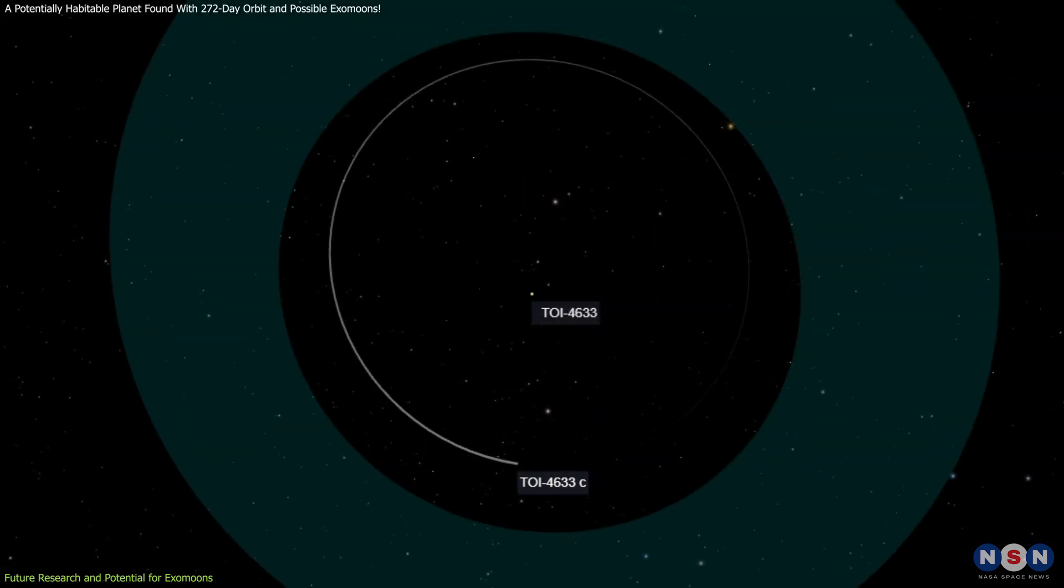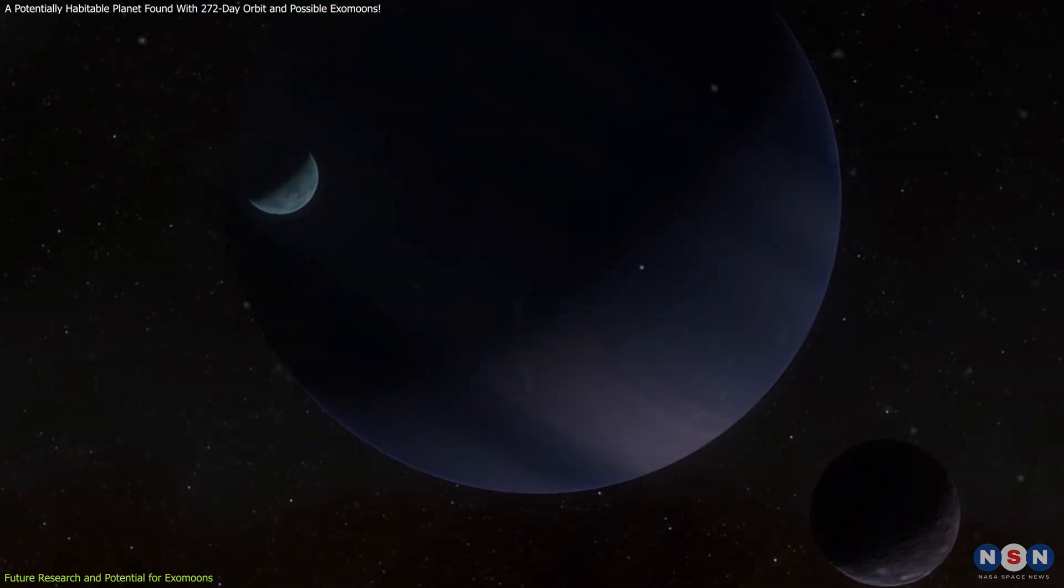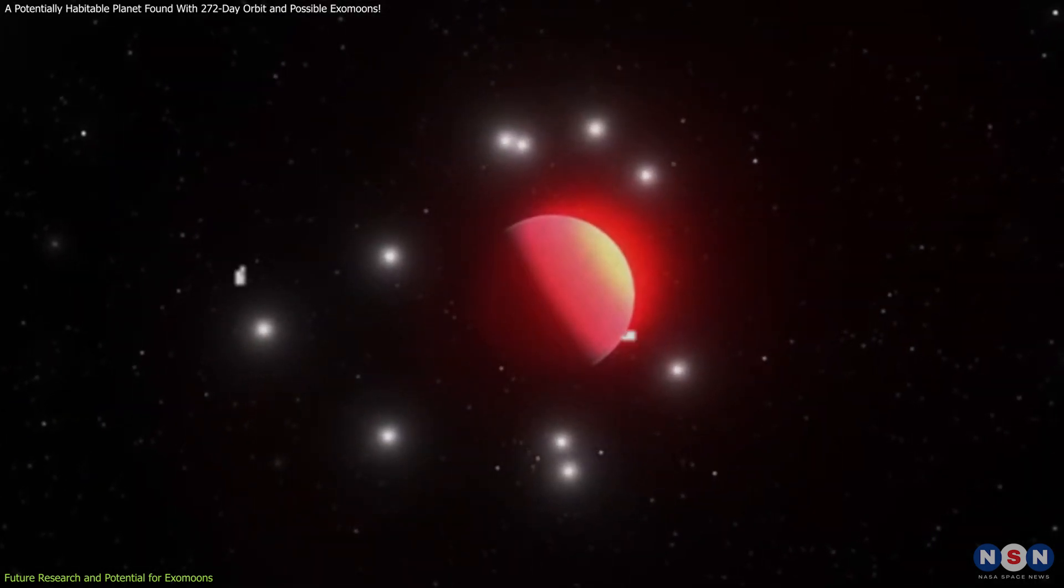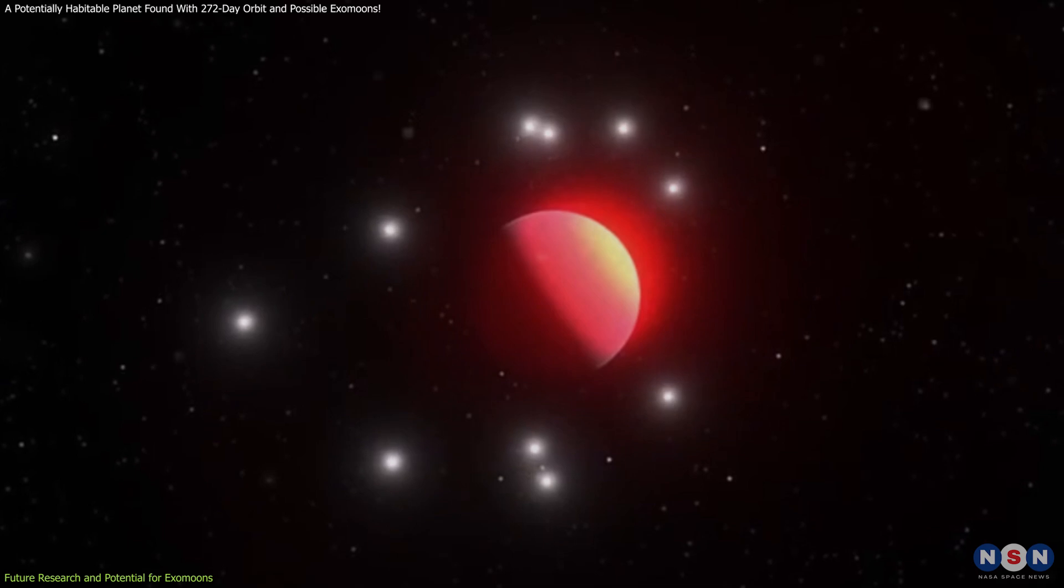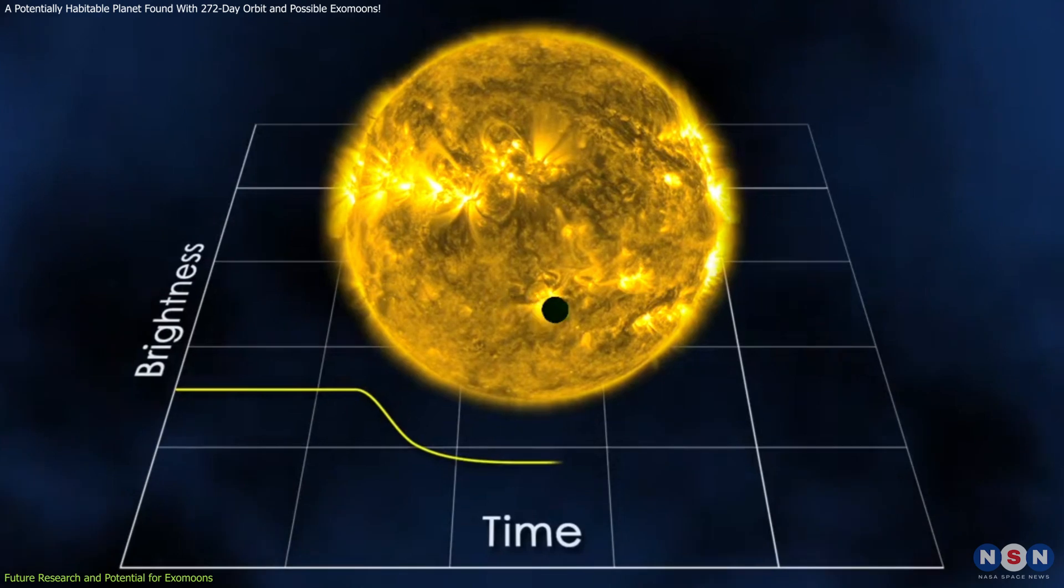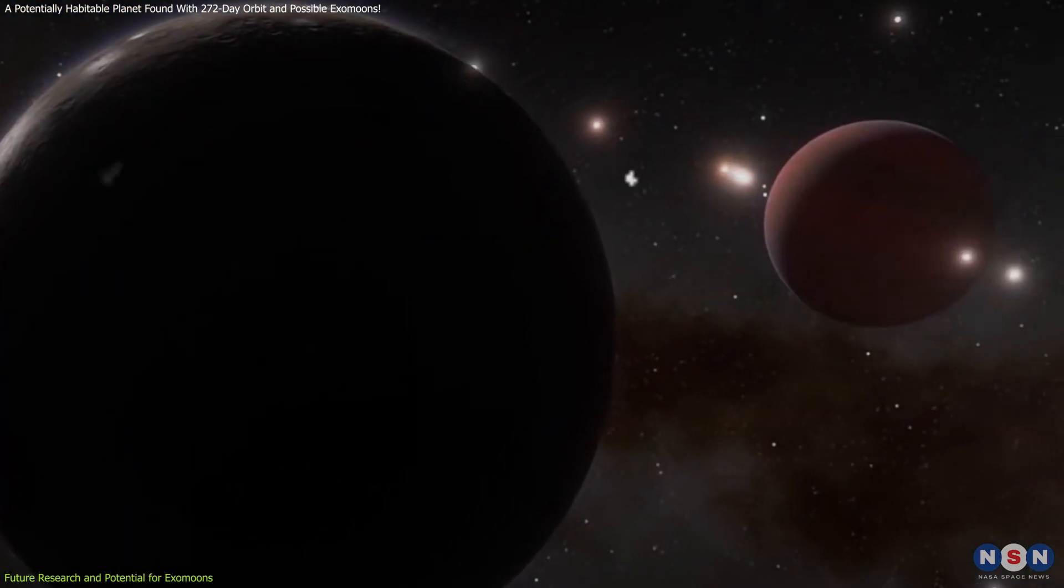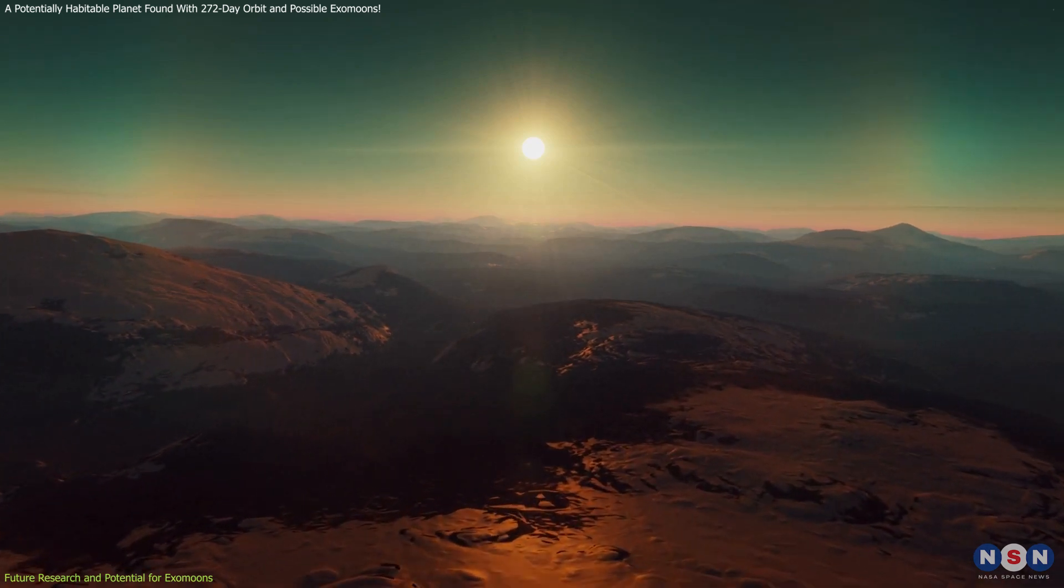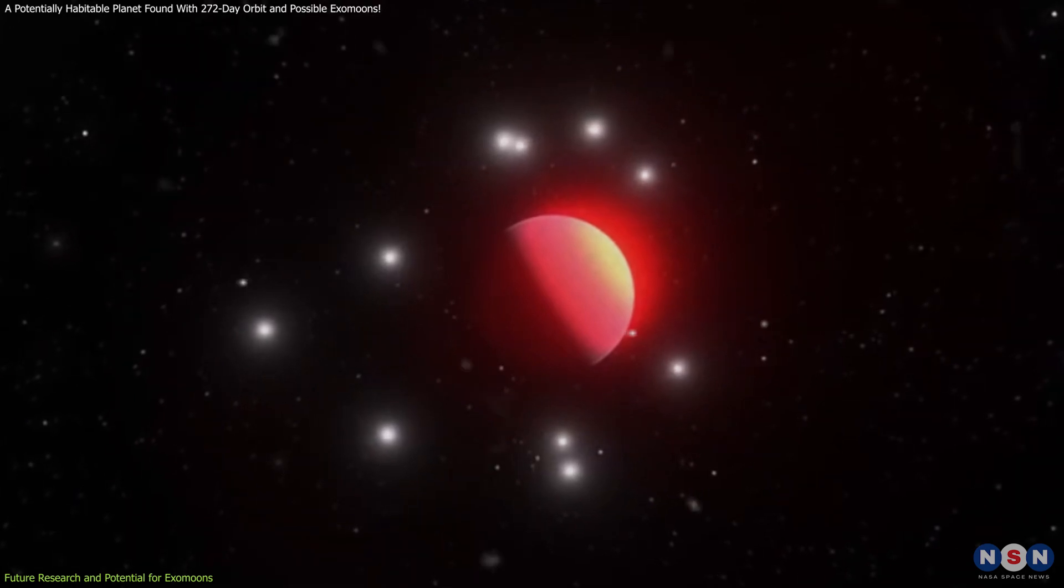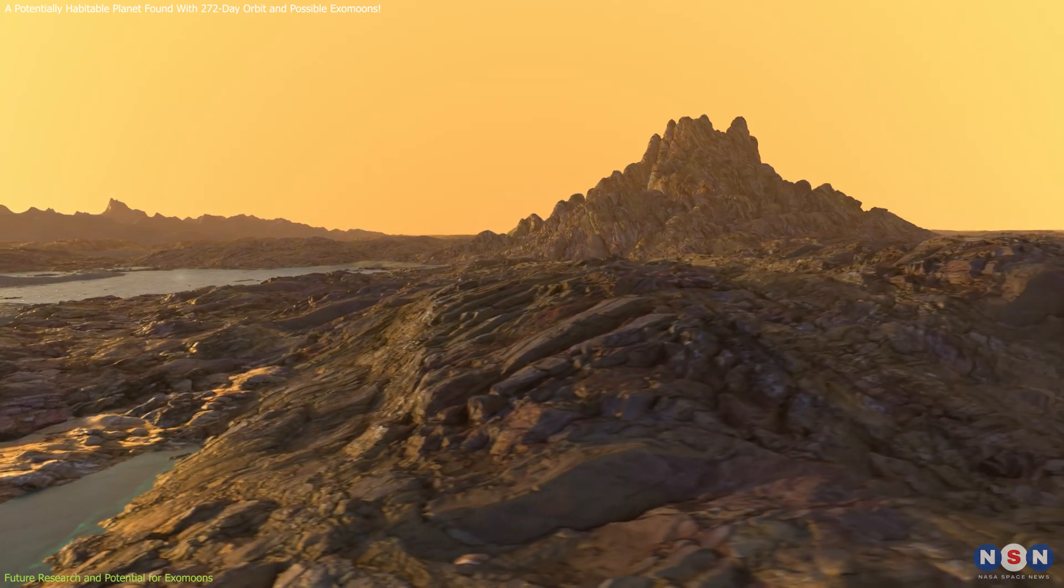Previous studies have shown that long-period planets like this one are more likely to have satellites or moons. Given the planet's long orbit and the system's brightness, it is an ideal candidate for exomoon detection campaigns. Future observations using advanced telescopes and techniques like transit timing variations could reveal the presence of these moons. If it has a moon, it could potentially have a solid surface and conditions suitable for life. The gravitational interactions between the planet and its moon could create a stable environment where water might exist in liquid form.